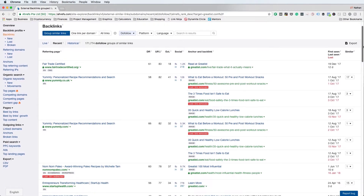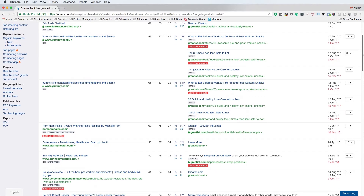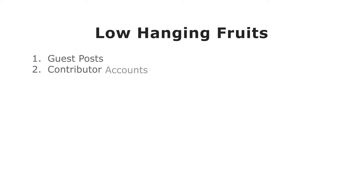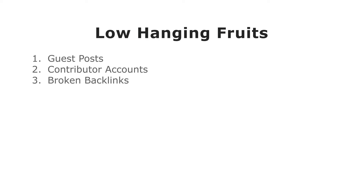Outside of do-follow and no-follow, there are specific link types that are easier or harder to acquire. Low-hanging fruit — the easiest to acquire — includes guest posts, contributor accounts, and broken backlinks. If you have a little authority in your industry and some good ideas, you can get guest posts published on the same sites your competitors have already gotten published on. Broken backlinks, where you have some leverage, are also a good way to acquire backlinks.